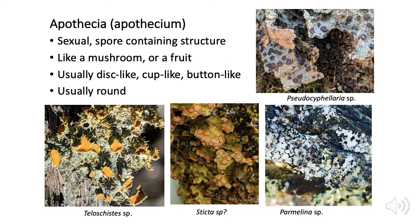The main structures involved in sexual reproduction are called apothecia — apothecium is the singular, and if you want to be a cool lichenologist, you might call them appos for short. Apothecia are a great place to start when learning lichen structures because they're really common and quite easy to identify. They're almost always circular and fairly regular in shape — they can be disc-like, cup-like, or button-like, but they're usually round. So if you see a round feature, that is probably an apothecia.